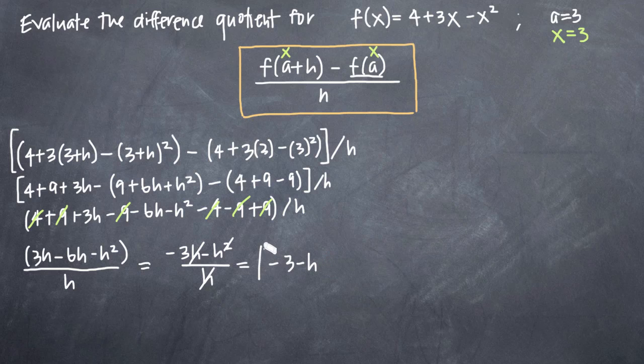And that's it. This here, -3 - h, is the difference quotient for our function f(x) = 4 + 3x - x².